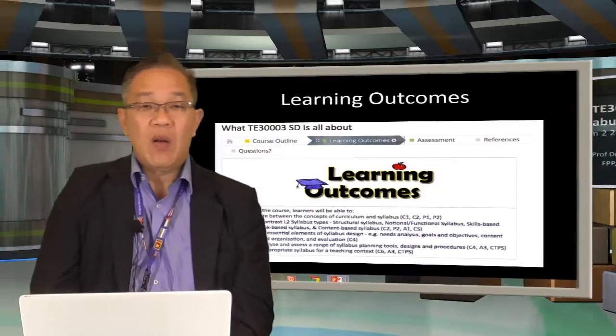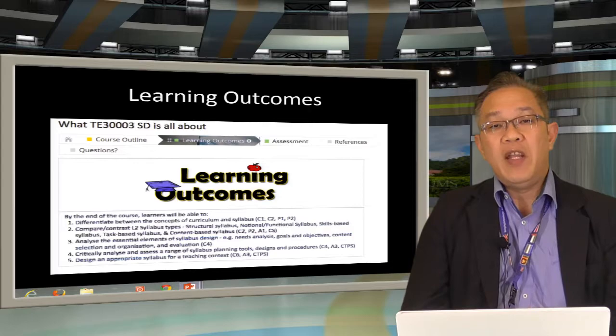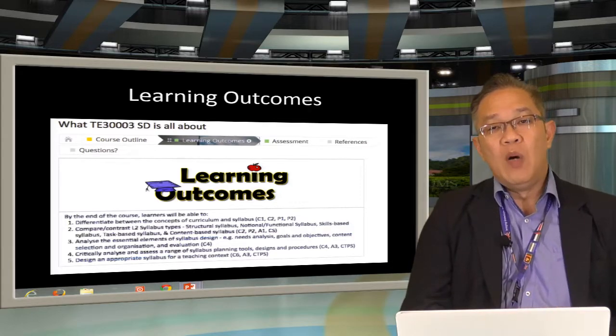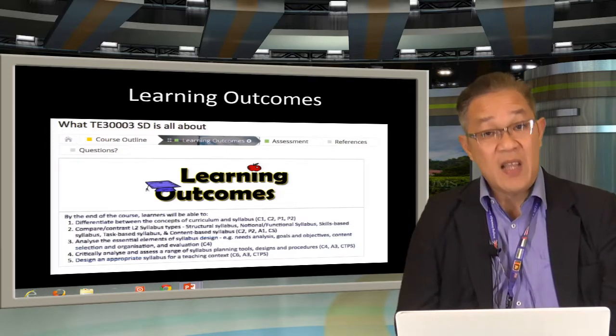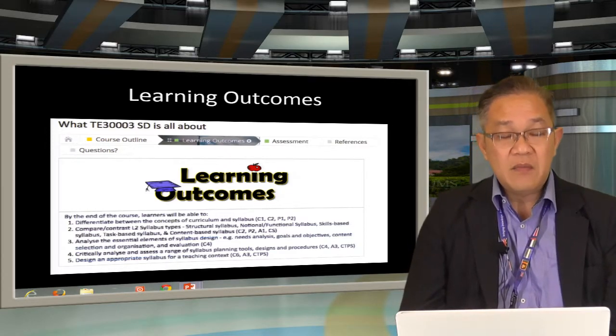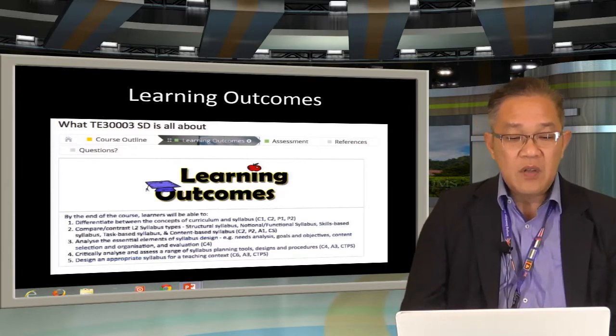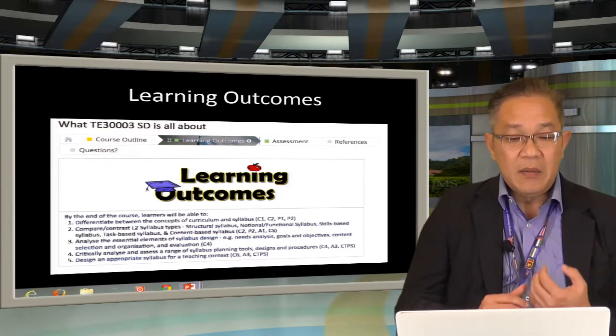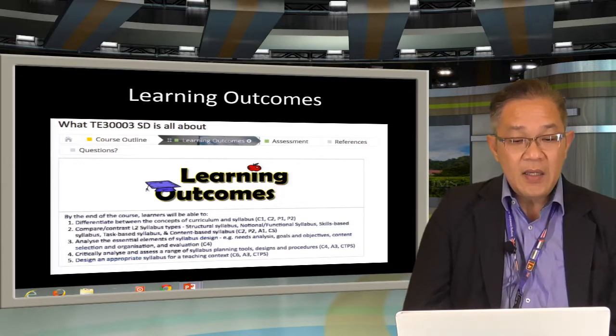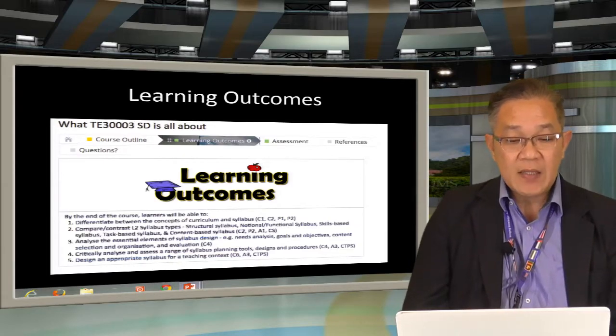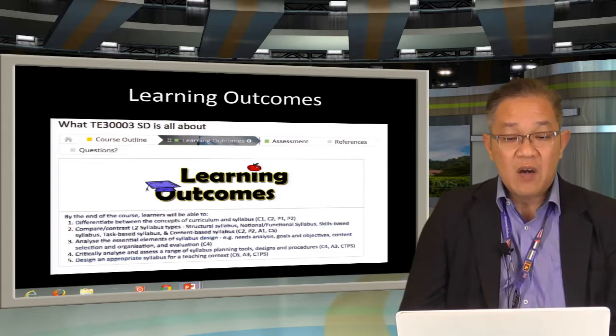So let's get to the learning outcomes. There are five major learning outcomes and they cover a range from lower cognitive to very high level of cognitive processing. The first two outcomes basically require you to understand, being able to differentiate between the concepts of curriculum and syllabus, and you are able to compare and contrast the different syllabus types that you will come across throughout this course.